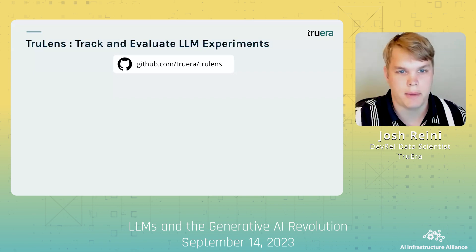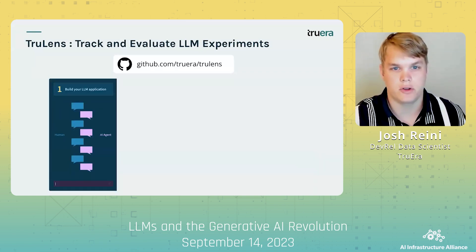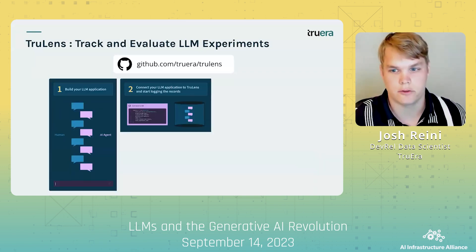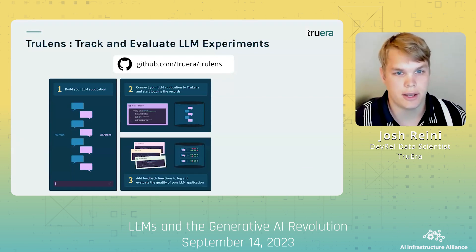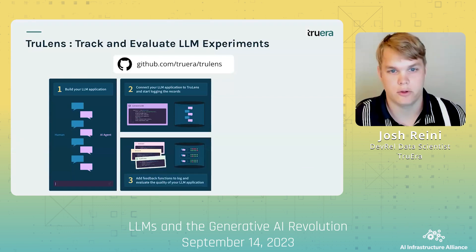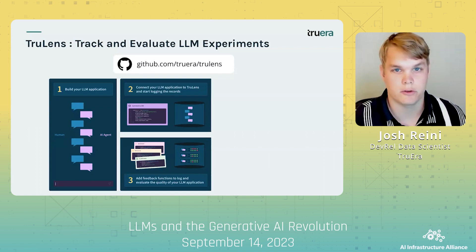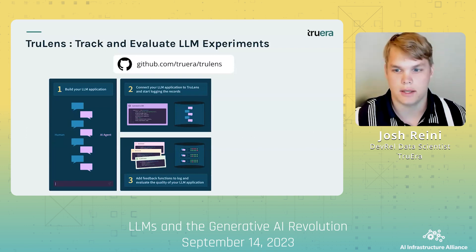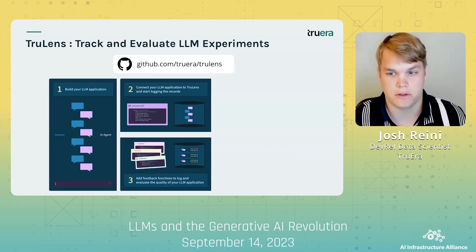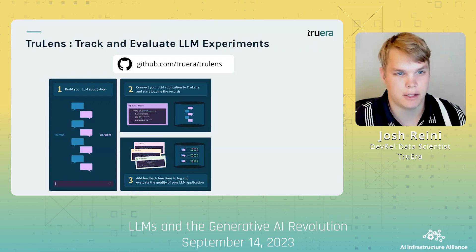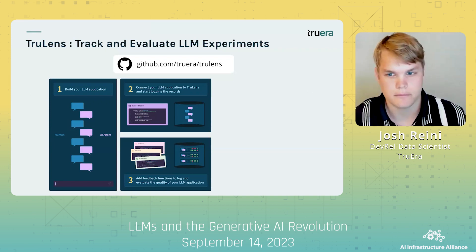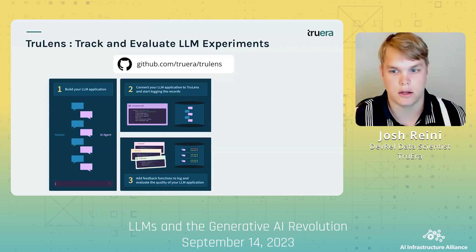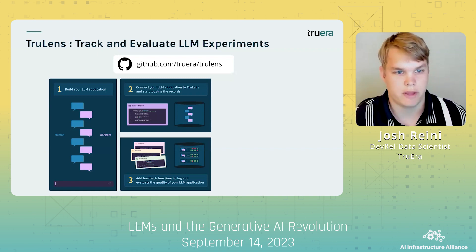Once you've built your LLM application, you can connect it to TrueLens and start logging records. Then you can add feedback functions to perform evaluations on each time your application runs. Here, we can test against inputs, outputs, and key metadata, along with internal context retrieved and different parts of the app.